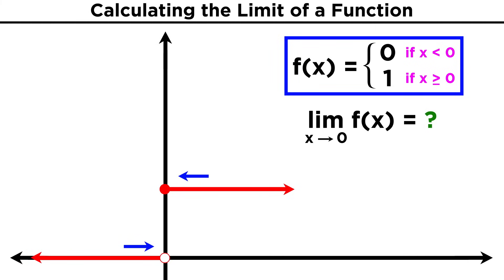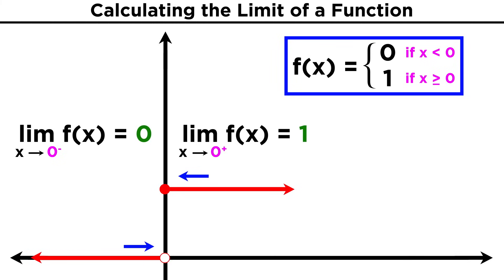But we can instead describe two different one-sided limits. The limit of f(x) as x approaches zero from the negative side, which is indicated by a negative sign in superscript over the zero, is zero. We are getting closer and closer to zero, or rather in this case the function remains at zero. The limit of f(x) as x approaches zero from the positive side, which is indicated by a positive sign in superscript over the zero, is one. We are getting closer and closer to one, or again in this case, the function remains at one. These are called left-hand and right-hand limits.